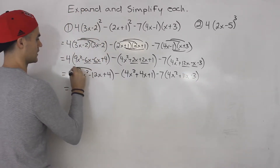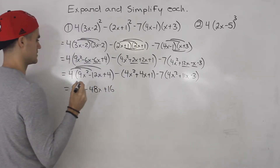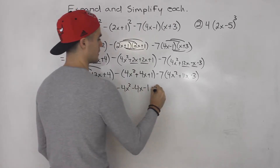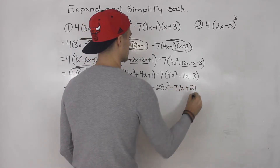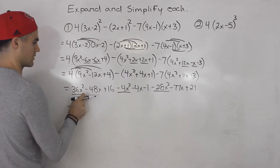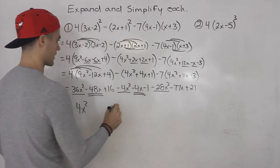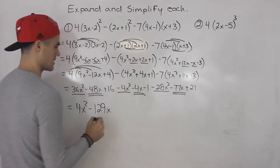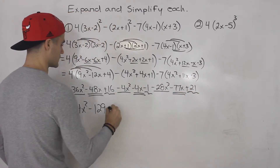Distributing the 4 inside the bracket we get 36x squared minus 48x plus 16, and we have minus 4x squared minus 4x minus 1, and here minus 28x squared minus 77x plus 21. So combining: 36x squared minus 4x squared minus 28x squared gives 4x squared; minus 48x minus 4x minus 77x gives minus 129x; and 16 minus 1 plus 21 gives 36.